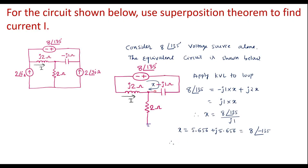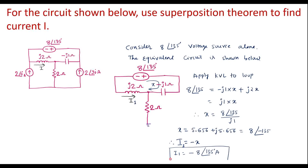Here we can see that current i is flowing left to right, whereas current x is flowing right to left. So i is opposite to x, that is i = -x. I will call this current as i1 because I am considering only one source. So i1 = -x. Therefore, i1 = -8∠135° amps, which equals 8∠-135° amps. This is current i1, obtained by considering the voltage source alone.